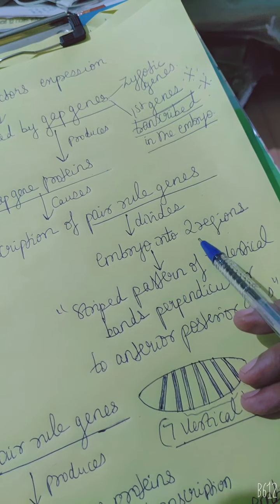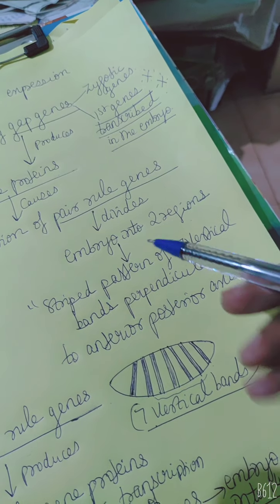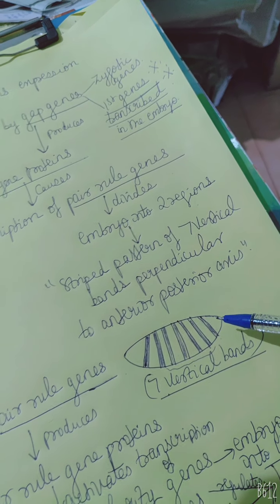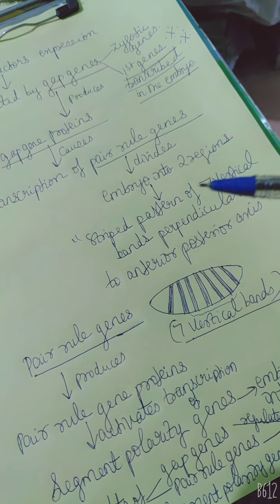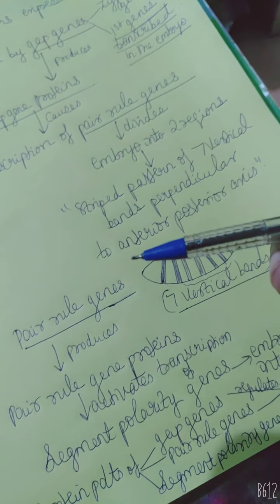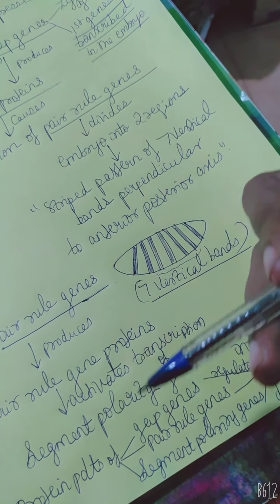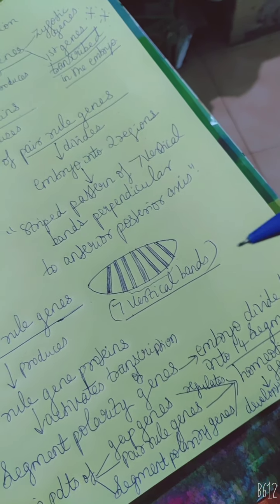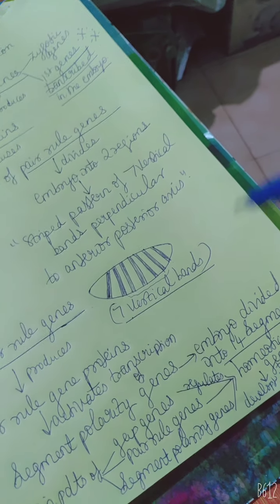The function of pair-rule genes is to divide the embryo into two regions, resulting in the formation of seven vertical bands perpendicular to the anterior-posterior axis. The pair-rule genes produce pair-rule gene proteins, which lead to the transcription activation of segment polarity genes. Segment polarity genes then divide the embryo into 14 segments, whereas the earlier pair-rule genes divided the embryo into only two regions.